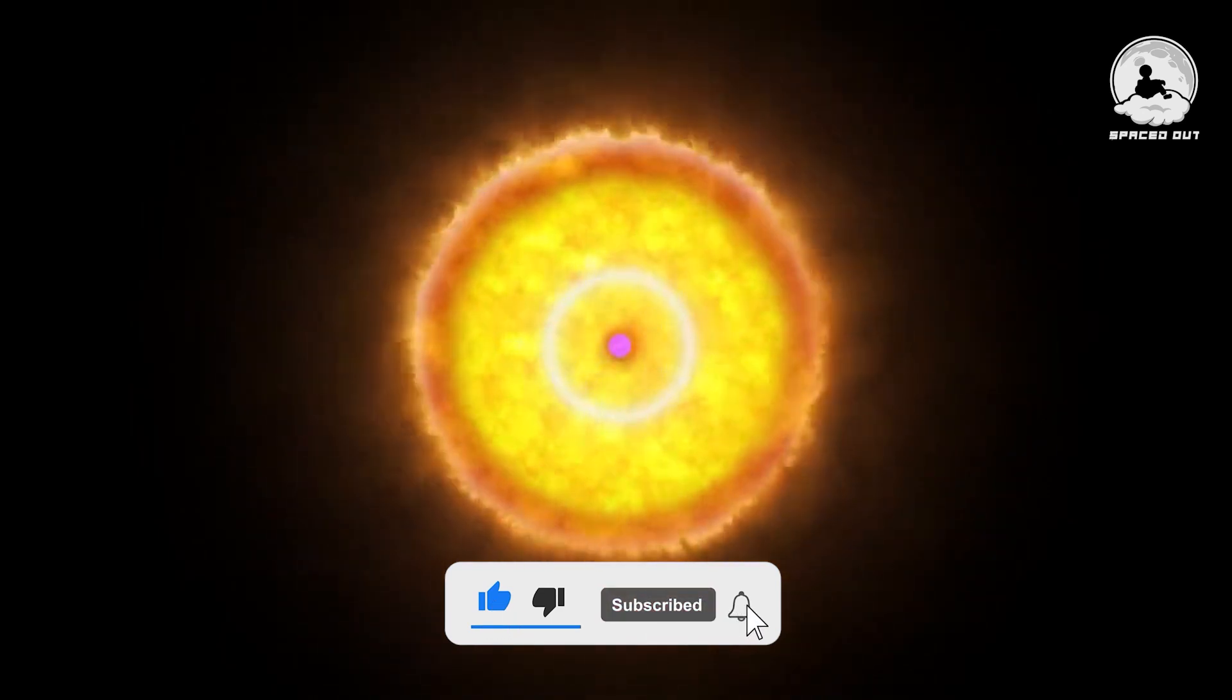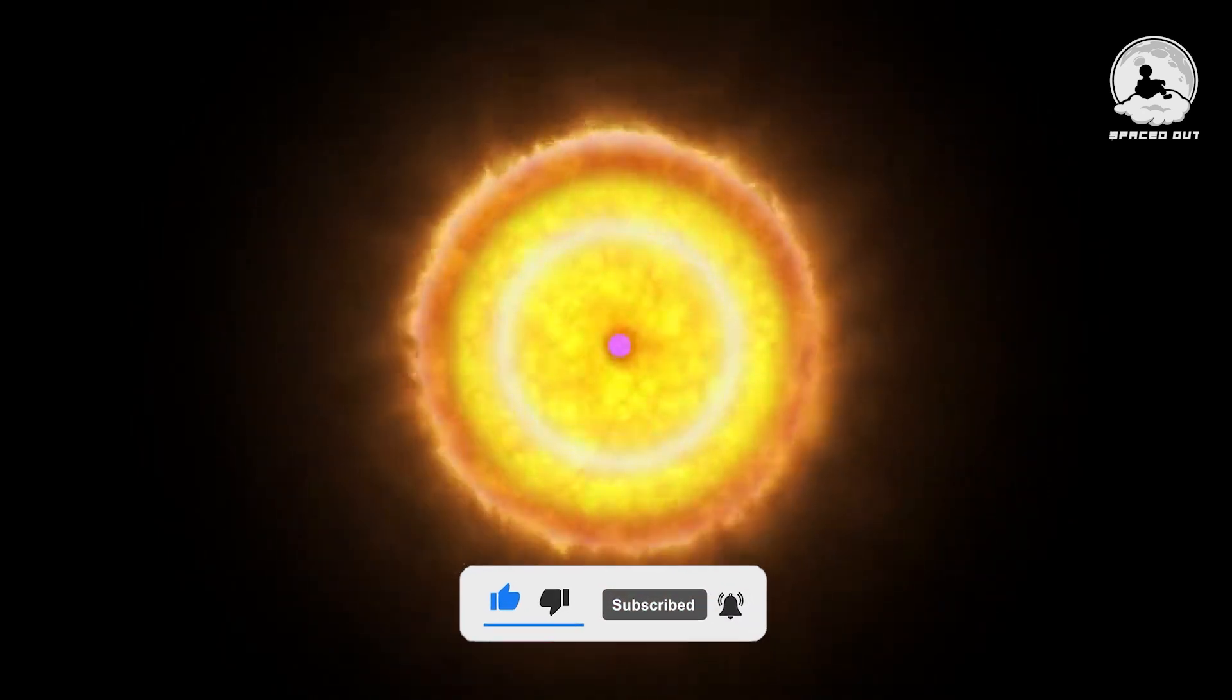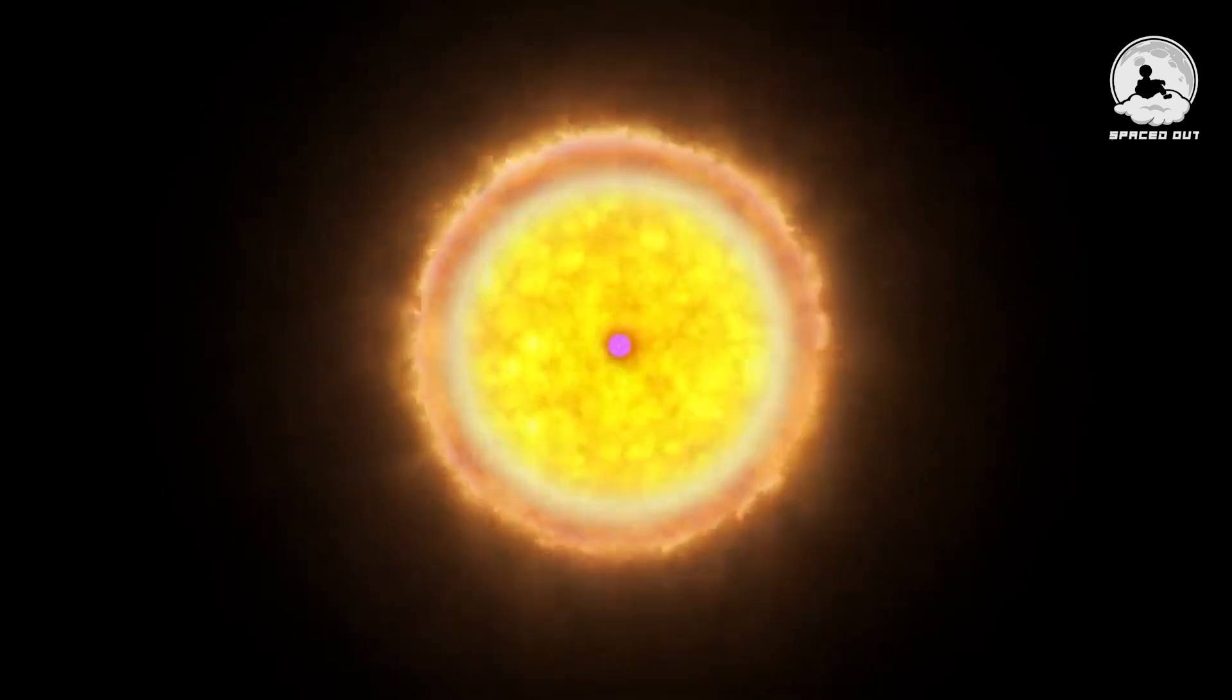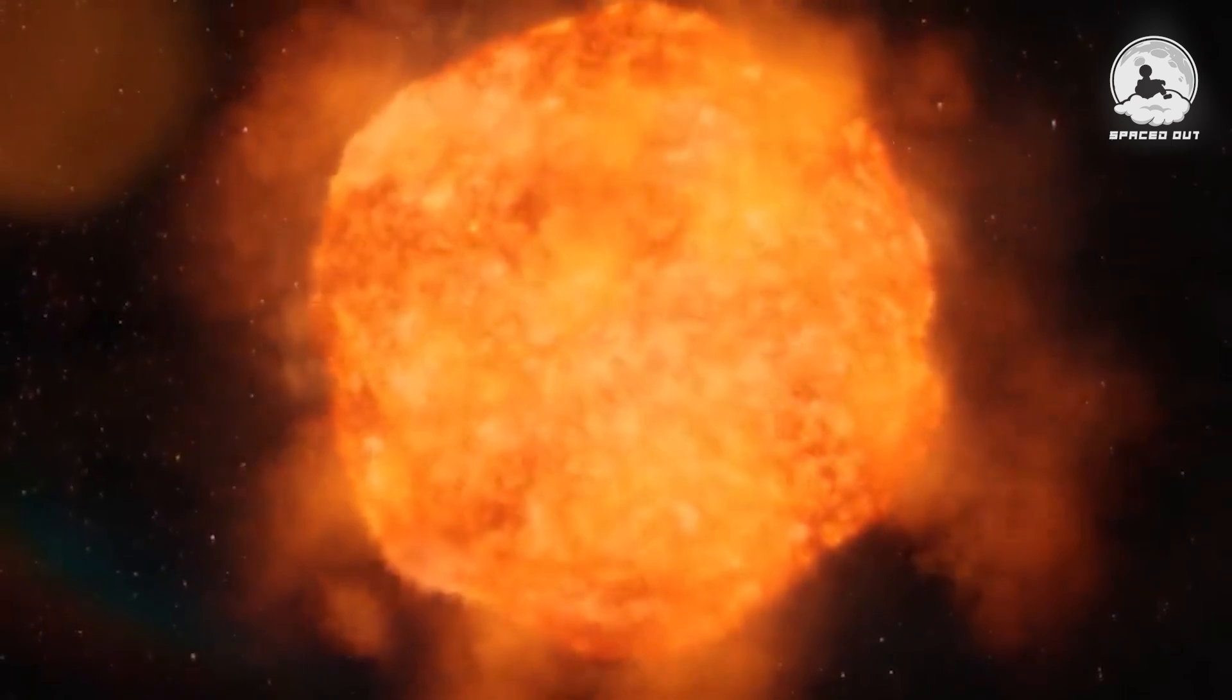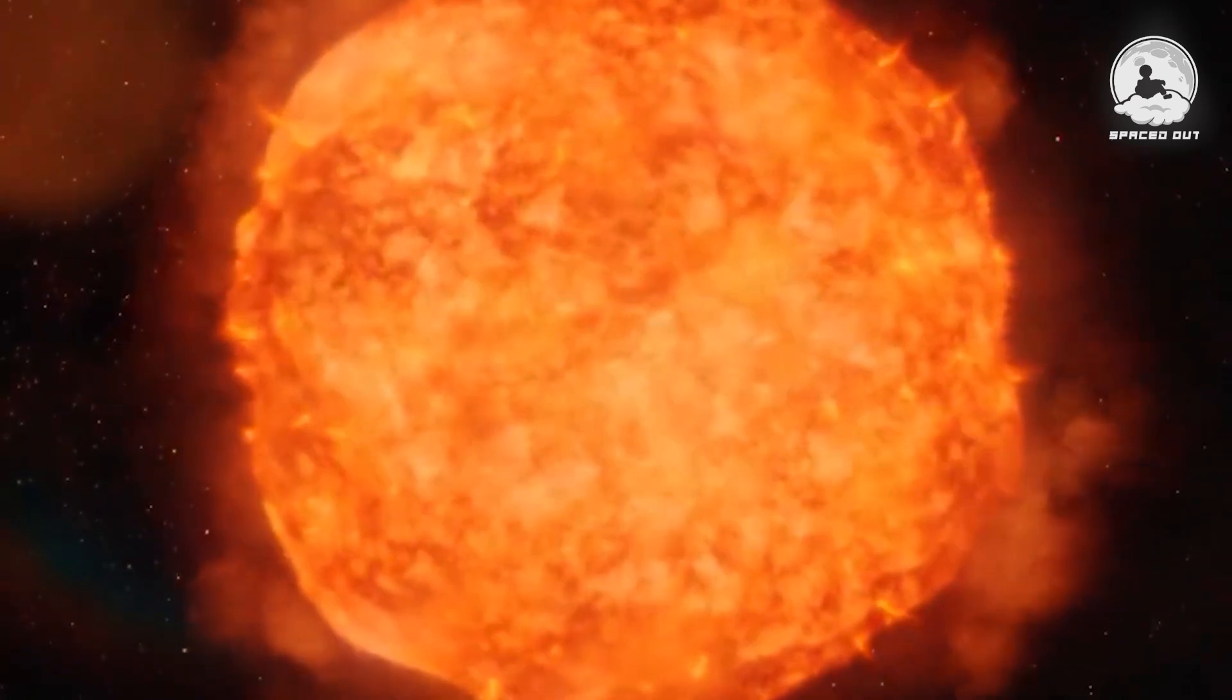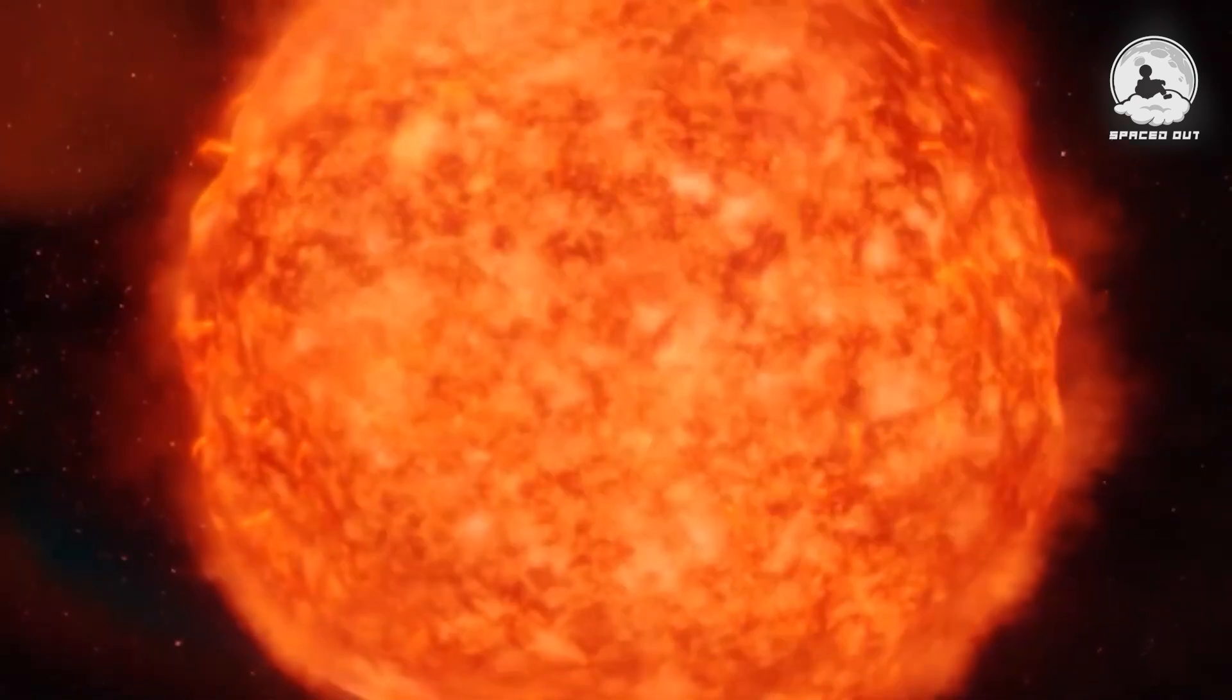At that point, the delicate equilibrium between pressure and radiation starts to shift, and gravity gains the upper hand. The star gets squeezed even tighter than before. In this intense squeeze, the core of the star heats up and burns even more vigorously. Meanwhile, the outer layers of the star expand, swelling by hundreds of times their original size. This expansion allows the star to fuse heavier and heavier elements in its core.